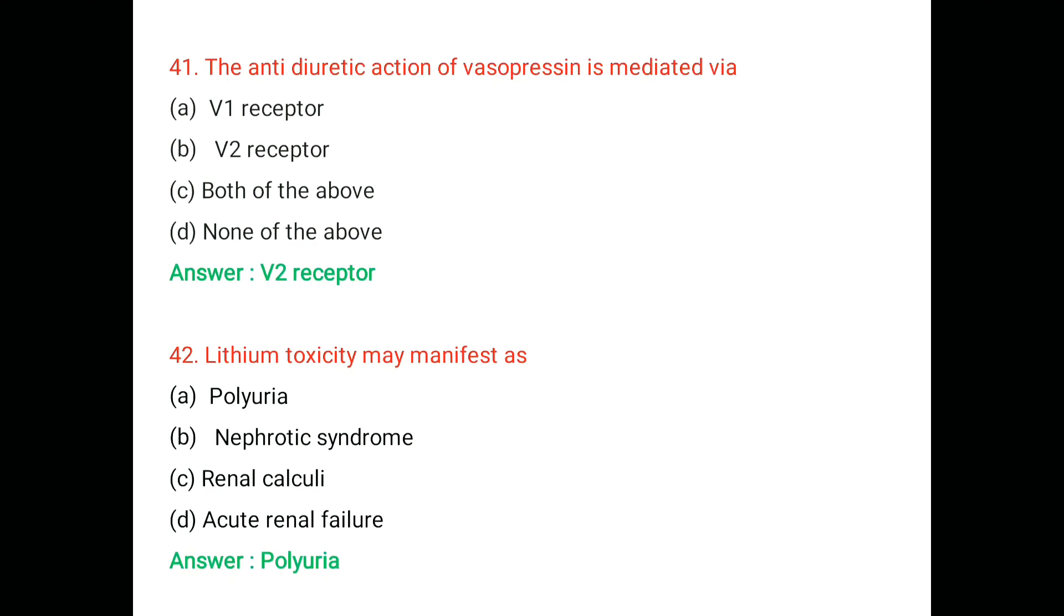Vasopressin binds with V2 receptor, which are located on the distal convoluted tubule and basolateral cells of the collecting tubules that stimulates aquaporins and that leads to reabsorption of renal tubular water. Thereby, it produces antidiuretic effect.